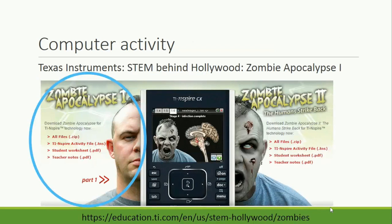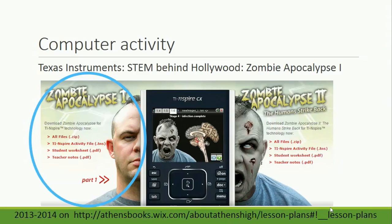Pair up with a classmate and use a computer to complete the activity to see how infection rates increase in a population. Search for Texas Instruments STEM Behind Hollywood Zombie Apocalypse on the Internet. When you find the page, be sure to click on Zombie Apocalypse 1 located on the left side of the page for this activity. You can find the specific lesson plan materials, including a worksheet for this activity, at the web address at the bottom.